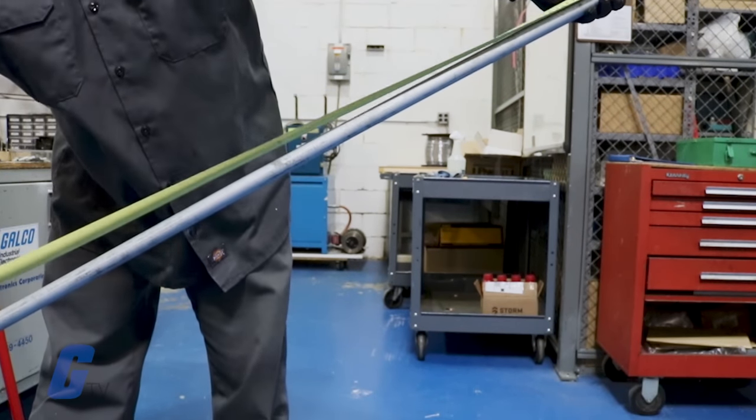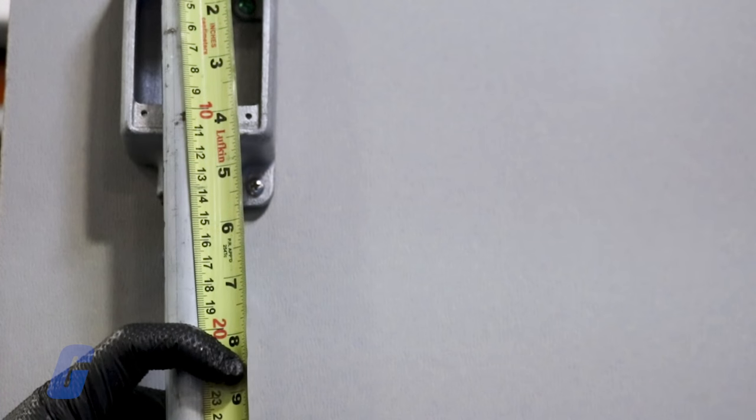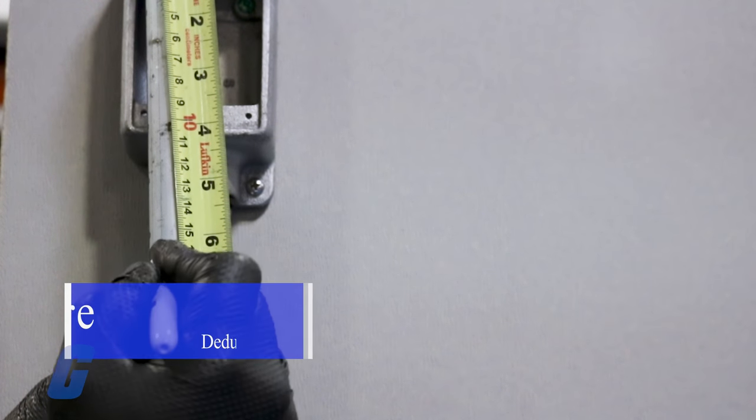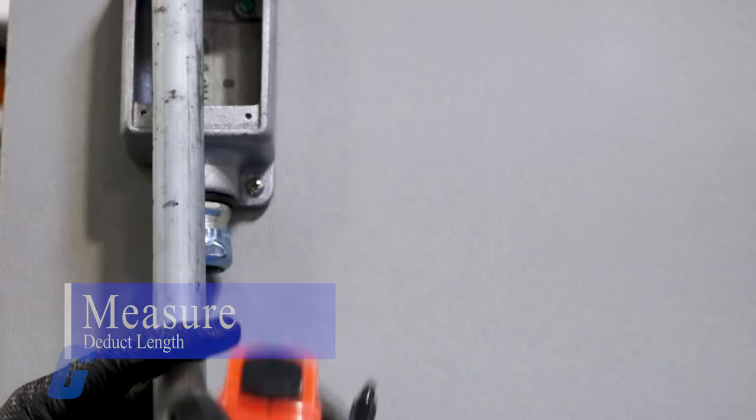You may find it useful to mark the conduit with a pencil where the corner should be. Next, you will need to measure the amount of extra conduit length required, also known as deduct length, as you lose some length due to the conduit bend.